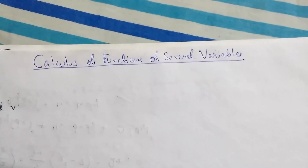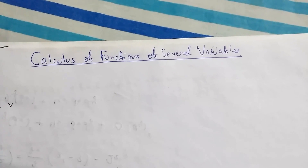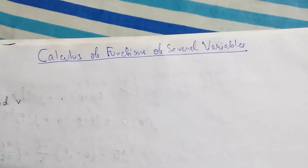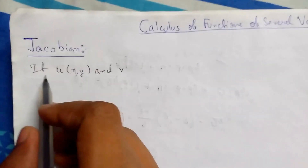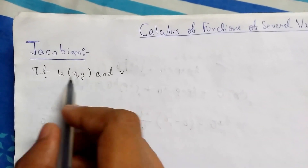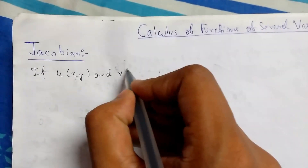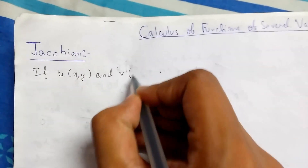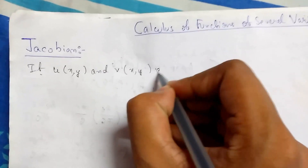Welcome back guys. Today we'll be learning about calculus of functions of several variables — specifically, we'll be learning about the Jacobian. If u is a function of x and y, and v is a function of x and y,